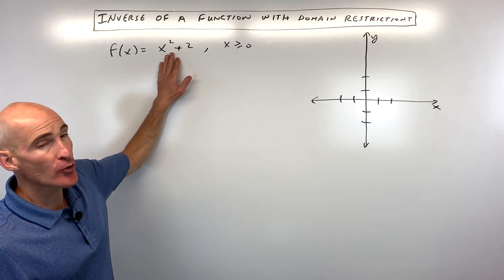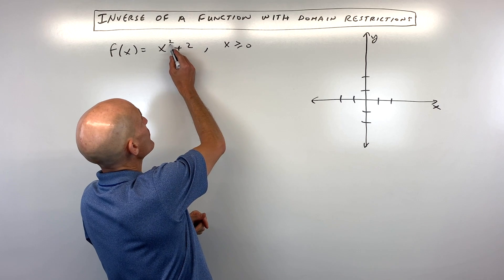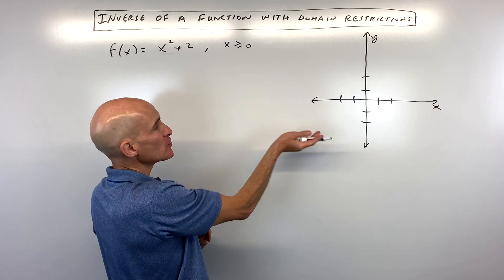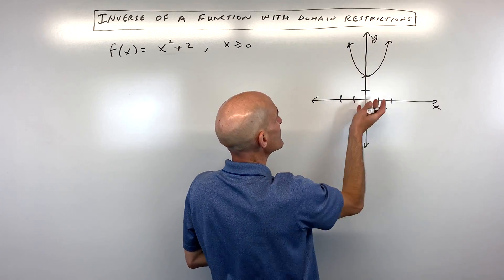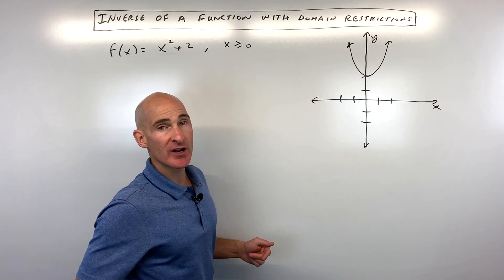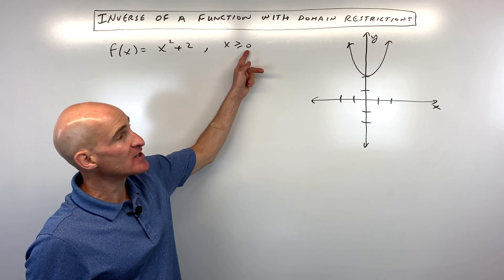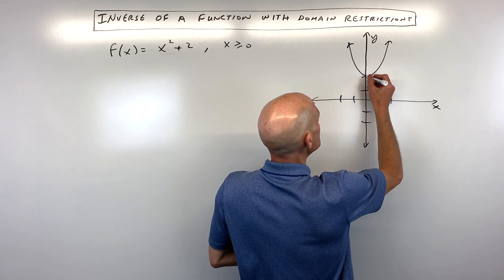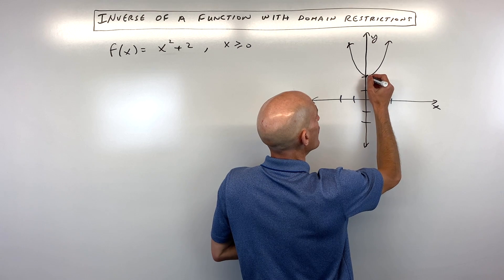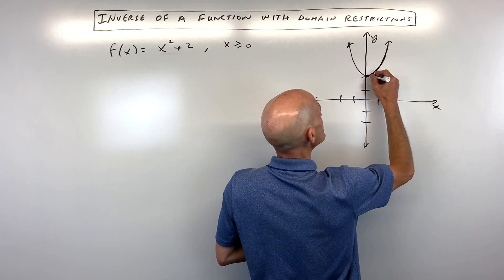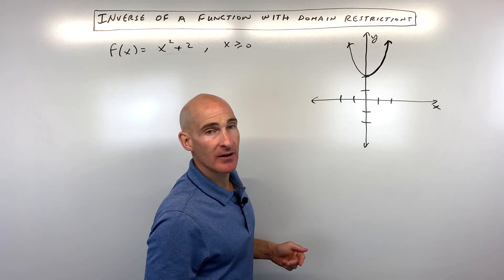The first thing I like to do is graph this and just see what it looks like. We know it's a parabola — x squared — and the plus 2 is shifting it up 2. So roughly speaking, this graph should look something like this, shifted up 2. They're saying x is greater than or equal to 0, meaning we're only interested in the part to the right of or equal to 0 — just this right branch of the parabola.